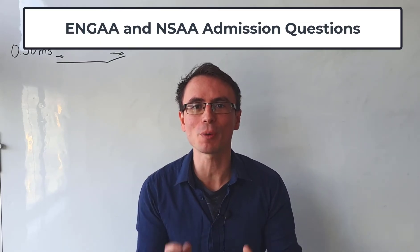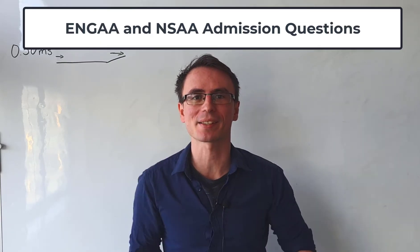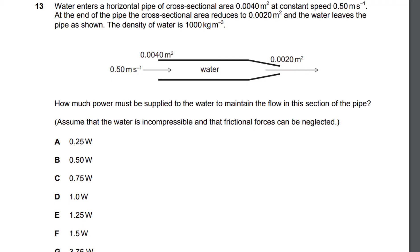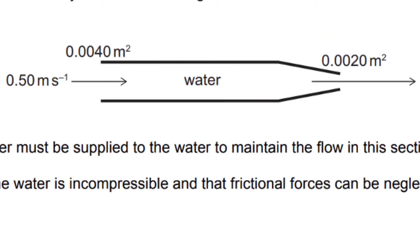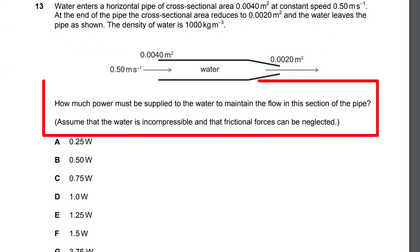Let's have a look at a Cambridge admissions question on fluid mechanics. Water enters a horizontal pipe of cross-sectional area 0.04 meters squared at a speed of 0.5 meters per second. At the end of the pipe, the cross-sectional area reduces to half of the original value. How much power must be supplied to the water to maintain the flow?